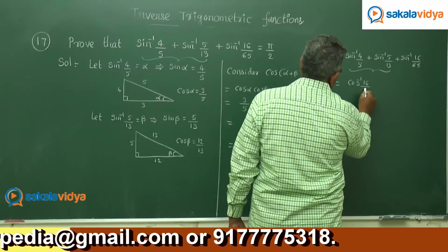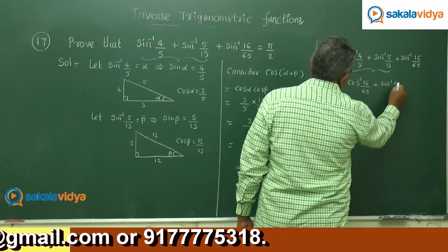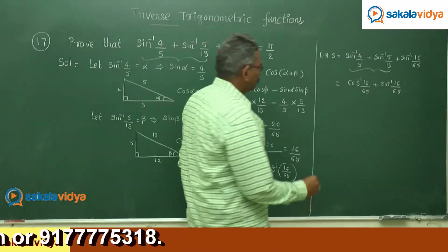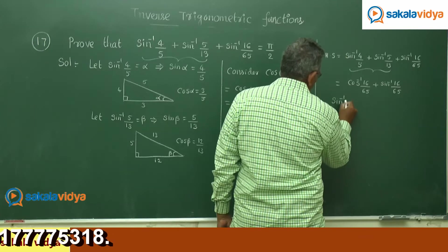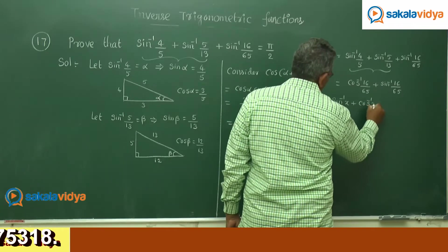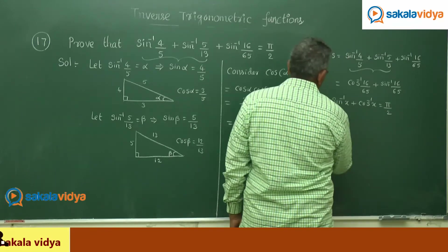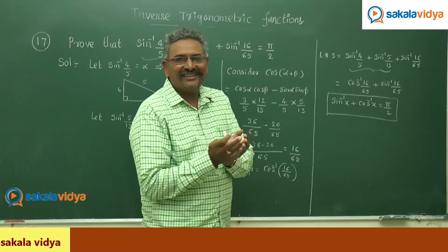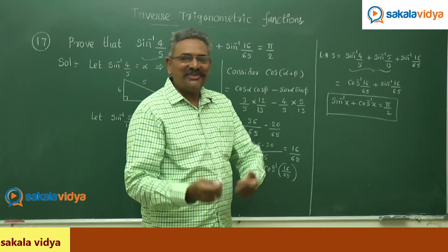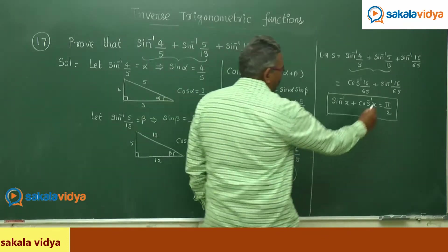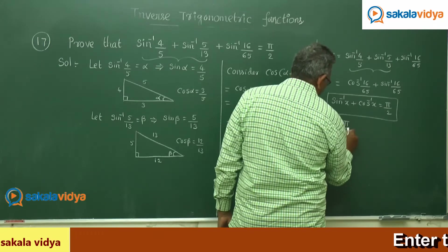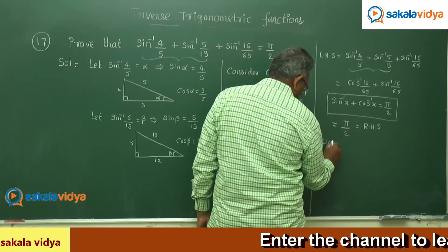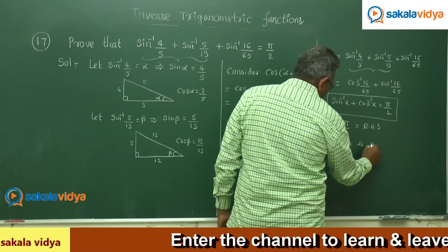We got cos inverse 16/65 plus sin inverse 16/65. Using the very important formula sin inverse x plus cos inverse x, we can write directly the value π/2. This is the RHS. Hence it is proved.